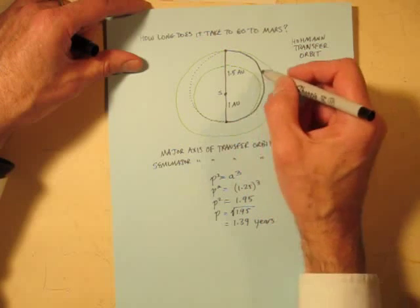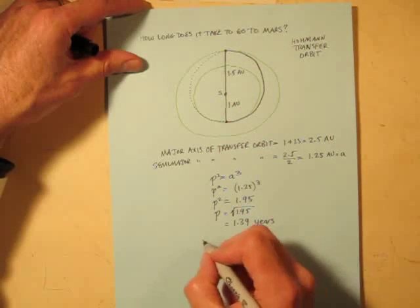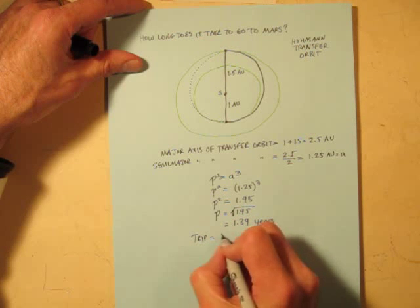That's how long it would take to go all the way around the ellipse. But we're only going to fly half of it.